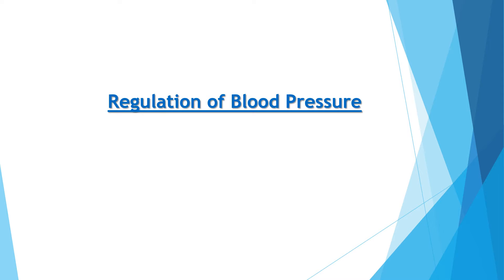Coming to regulation of blood pressure — blood pressure is the product of cardiac output and peripheral vascular resistance. So if cardiac output is increased, blood pressure may increase. And if peripheral vascular resistance is increased, blood pressure may also increase. From a therapeutic point of view, either reduction in cardiac output or peripheral vascular resistance or both shall control the blood pressure.